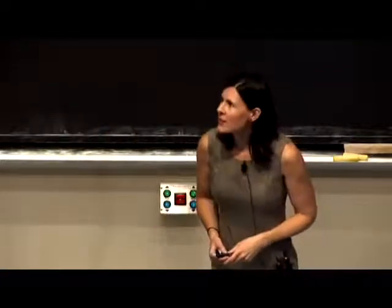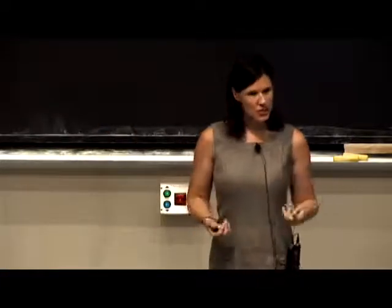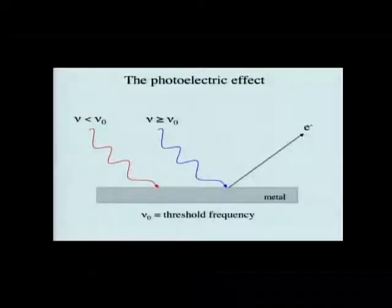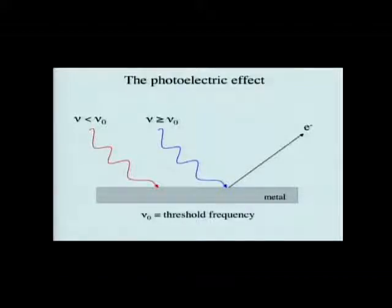Where we left off with the photoelectric effect was when we first introduced the effect, we were talking about it in terms of frequencies. For example, we were talking about a threshold frequency — a minimum frequency of light that you need in order to eject an electron from a metal surface.